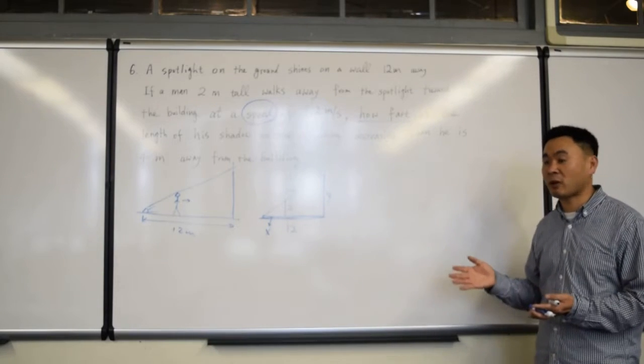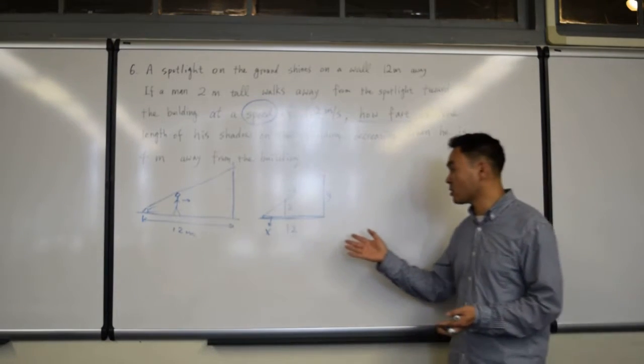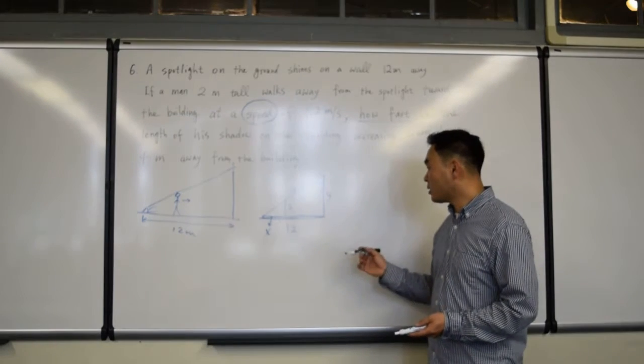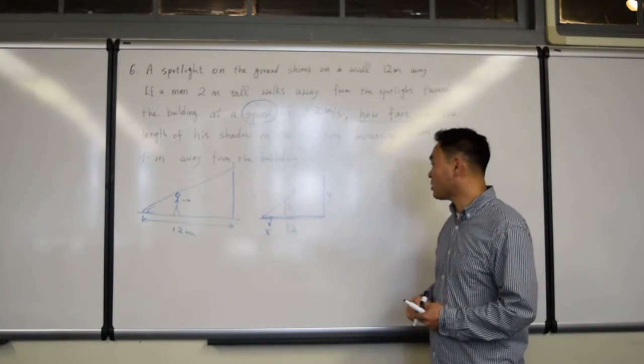And then, I'm going to put a y for the shadow, because shadow is also changing. If anything is changing, you put a variable. If anything is a constant, you put the numbers on the picture, okay? All right, so we are actually almost done.